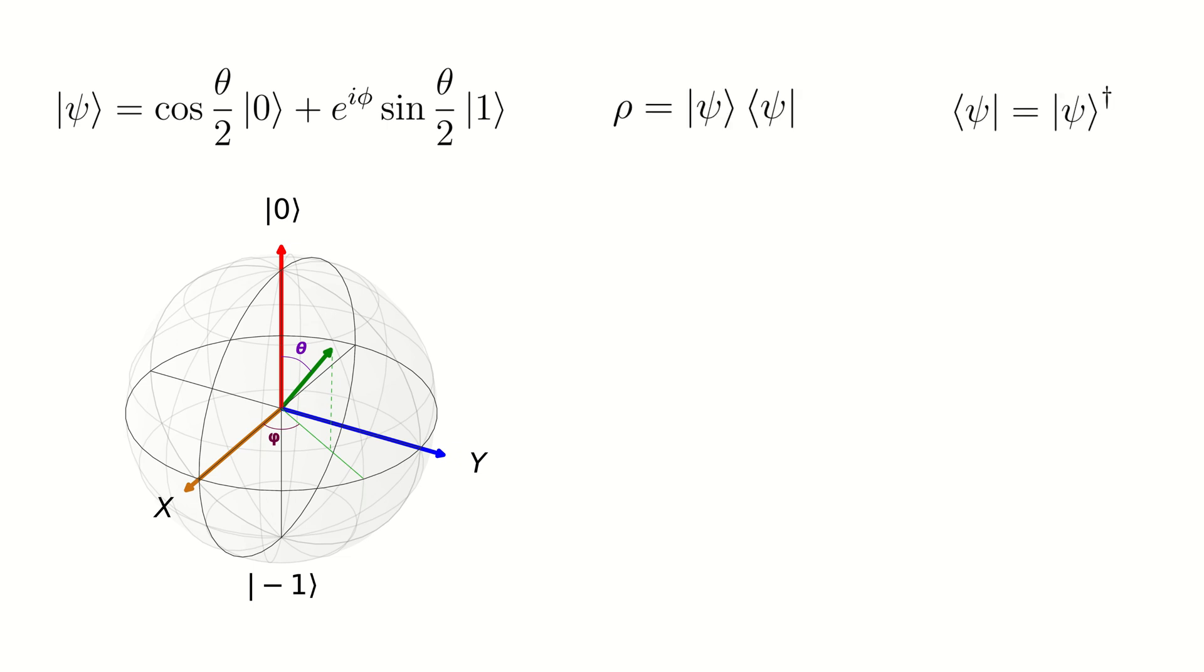The density matrix corresponding to the state by definition is given by the following formula. Here, the bra-psi is the transposed and complex conjugate ket-psi.